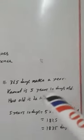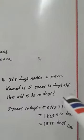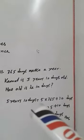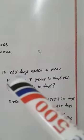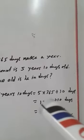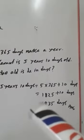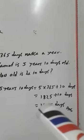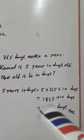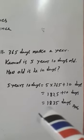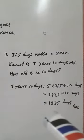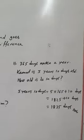365 days make a year. Kamal is 5 years and 10 days old. How old is he in days? 5 years and 10 days equals 5 × 365 plus 10. If 365 is multiplied by 5, it equals 1825. Then 1825 plus 10 equals 1835. The answer is: Kamal is 1835 days old.